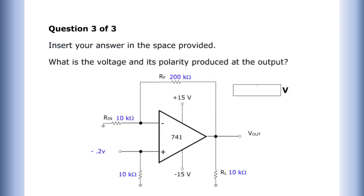And question 3. What is the voltage and its polarity produced at the output? The answer is negative 4.2 volts.